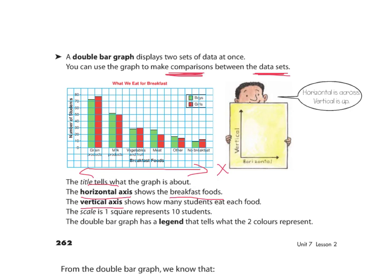Our vertical or up and down axis shows us the number of students, also sometimes called axis y. We do need to look at our scale. They've counted by 10, so each square is 10 students.